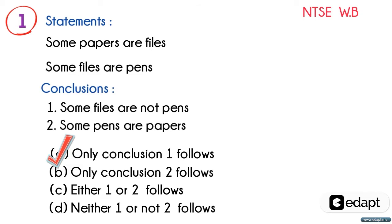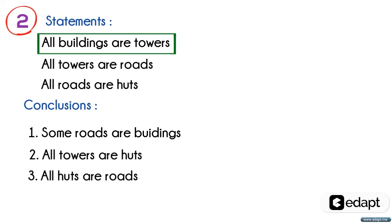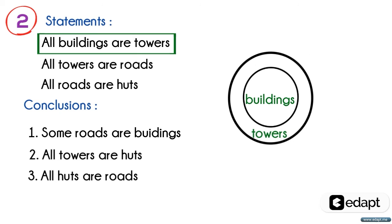Let's take another question. The statements are: all buildings are towers, all towers are roads, and all roads are huts. The first statement, all buildings are towers, means that the complete portion of buildings are inside the tower region, like this.